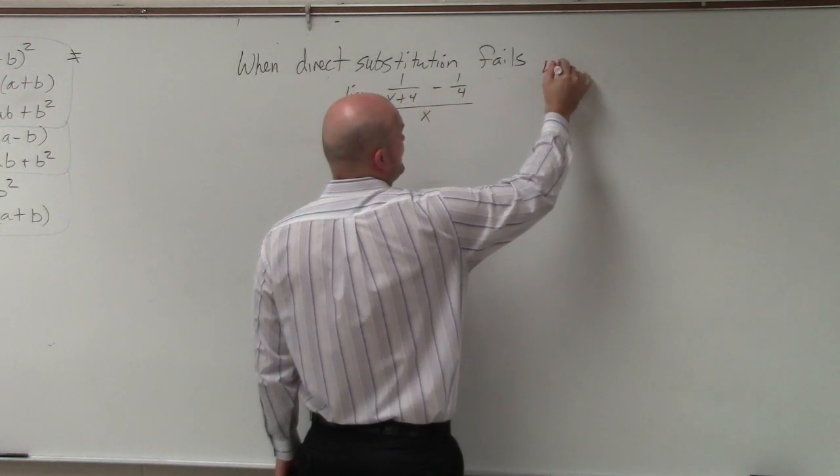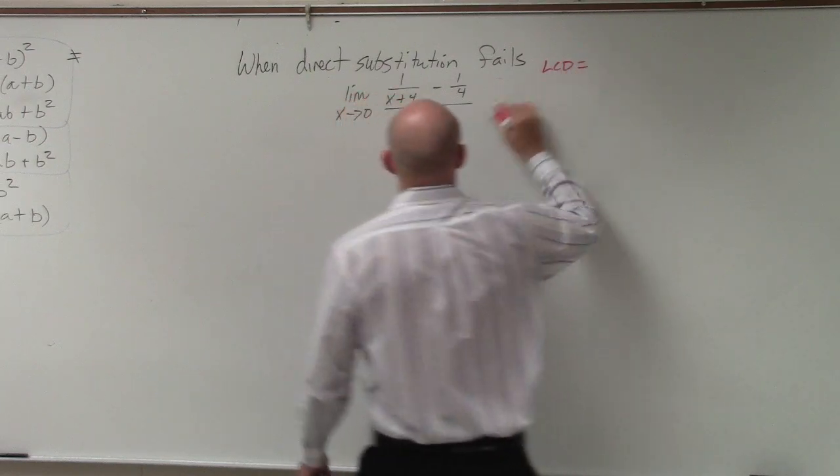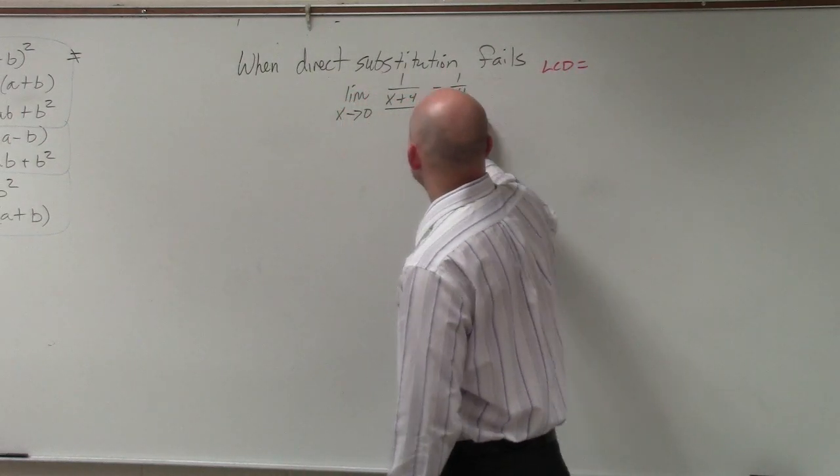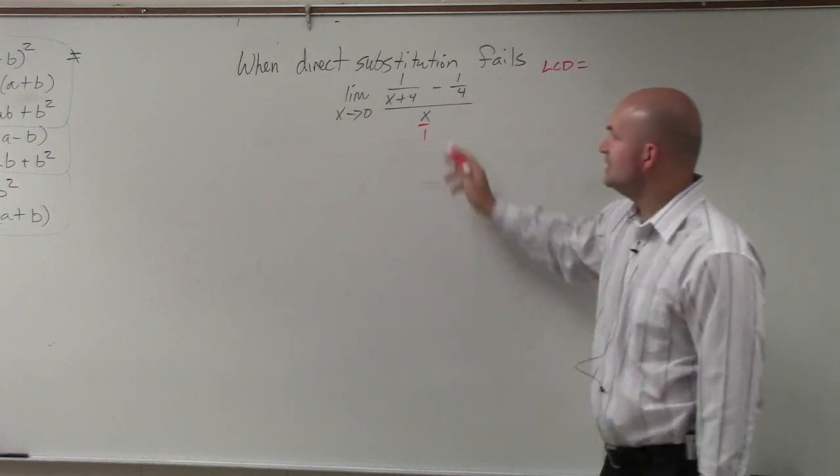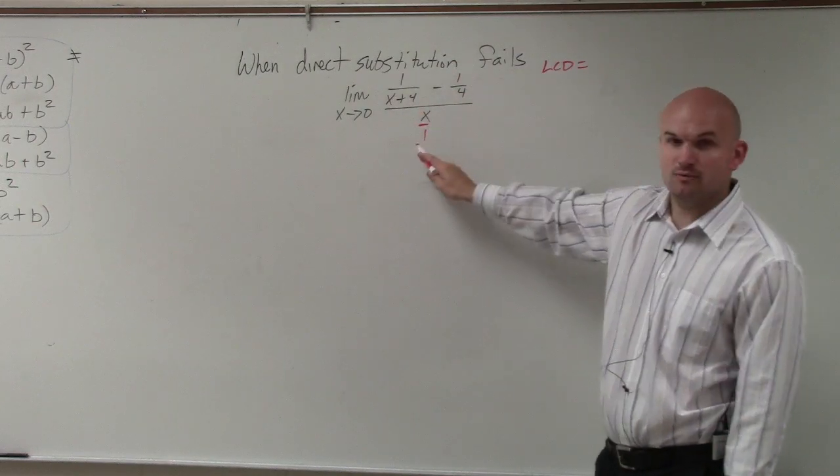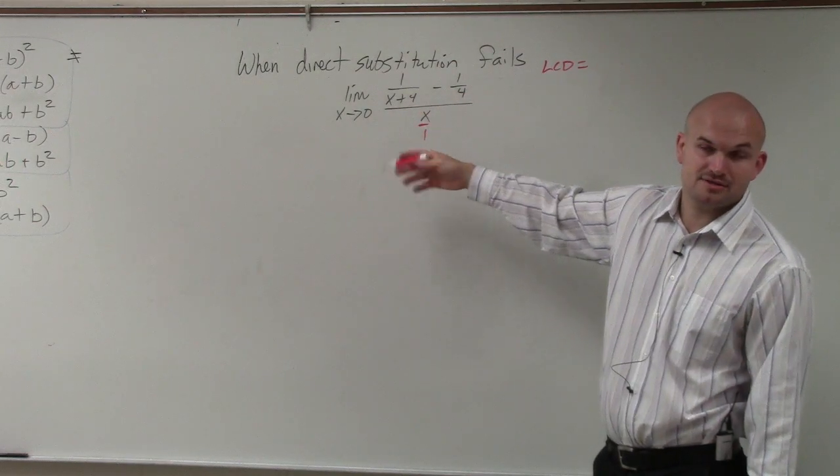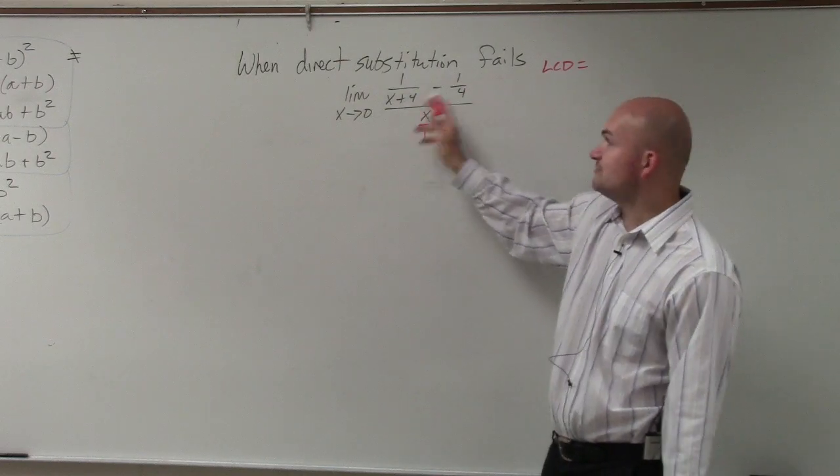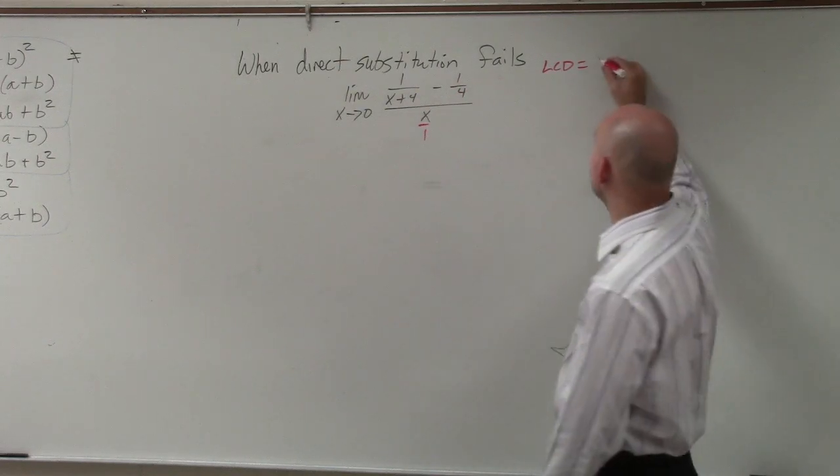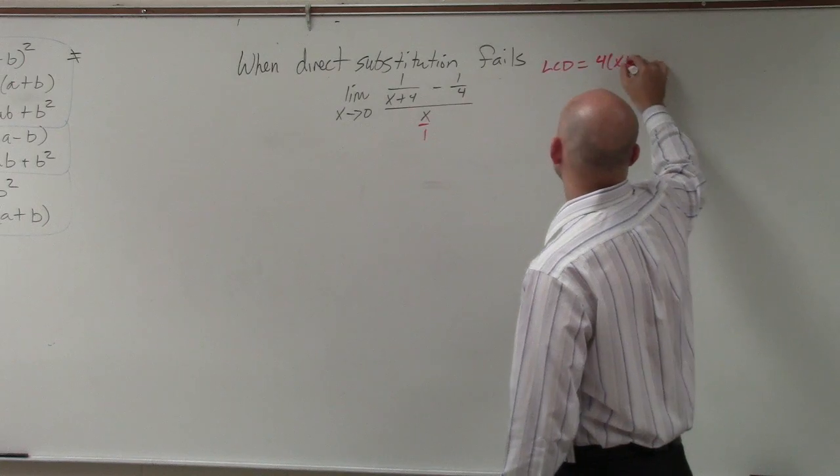A lot of times, I just like to identify what the LCD is. So of all of these denominators, the LCD is x plus 4, 4, and 1. That's all the denominators. So the least common denominator that x plus 4, 4, and 1 all divide into is 4 times x plus 4.